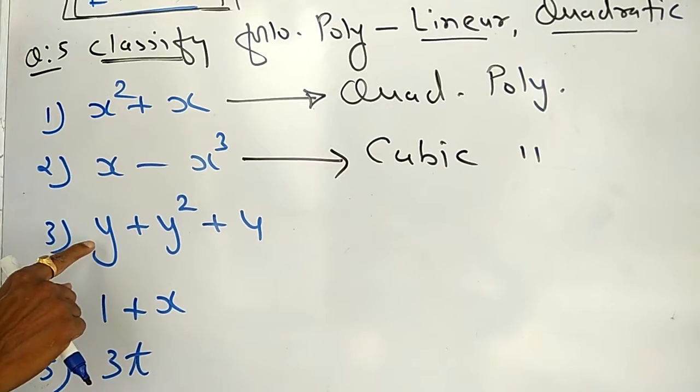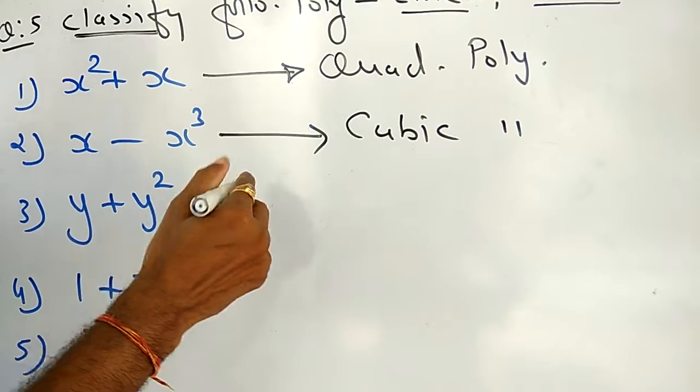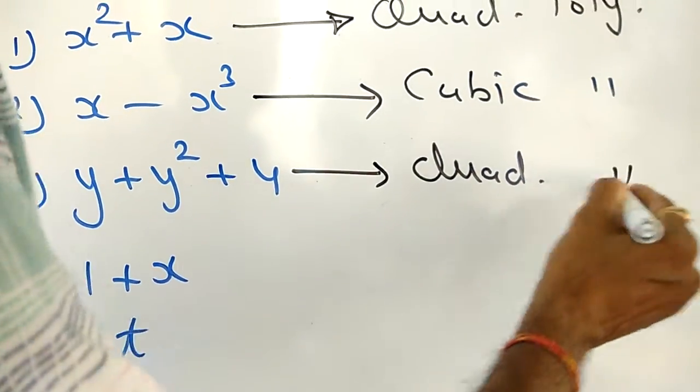Third one: y + y² + 4. Here, highest power is 2. So it is called as quadratic polynomial.